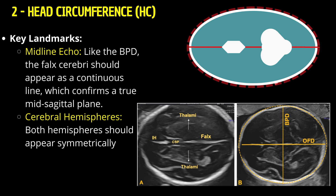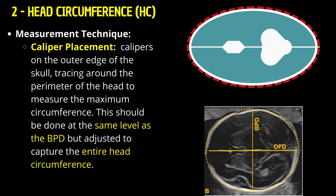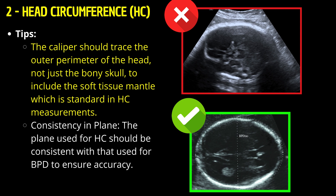Both cerebral hemispheres should appear symmetrically on either side of the falx cerebrae, confirming the probe is correctly aligned. For caliper placement, place calipers on the outer edge of the skull, tracing around the perimeter of the head to measure the maximum circumference at the same level as the BPD. The caliper should trace the outer perimeter of the head, not just the bony skull, to include the soft tissue mantle, which is standard in HC measurements. The plane used for HC should be consistent with that used for BPD to ensure accuracy.